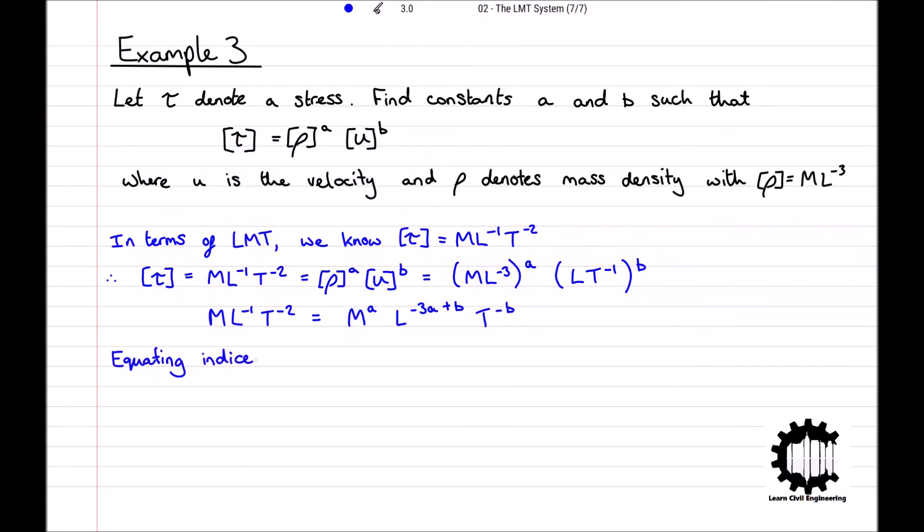Now equating the indices for M, L and T, we get that A is equal to 1, B is equal to 2, and minus 3A plus B is equal to minus 1.